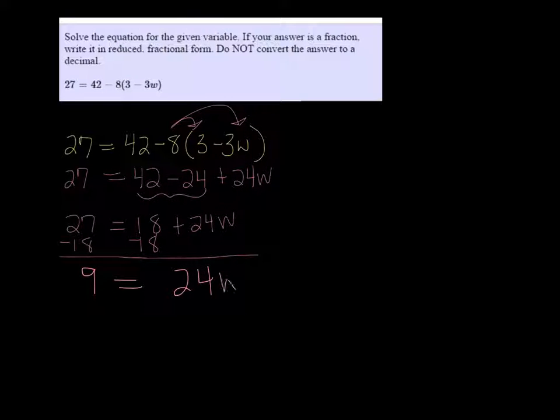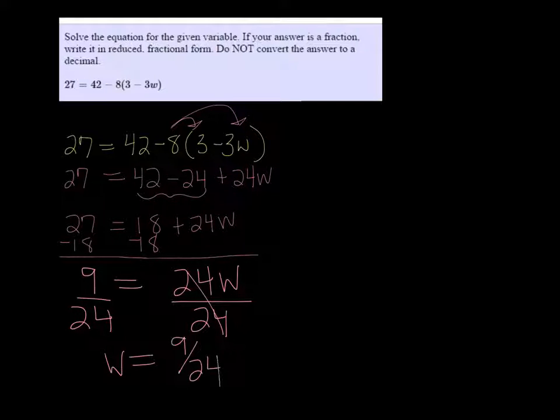Equals 24w. And then we'll divide by 24 on both sides to get w all by itself. So we get w equals 9 over 24, which reduces to 3 over 8.